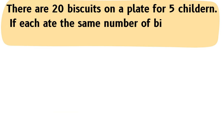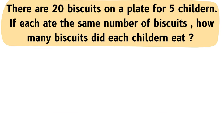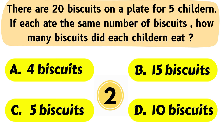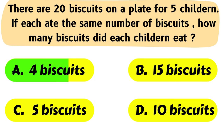Question No. 6: There are 20 biscuits on a plate for 5 children. If each ate the same number of biscuits, how many biscuits did each child eat? The correct answer is Option A: 4 biscuits.